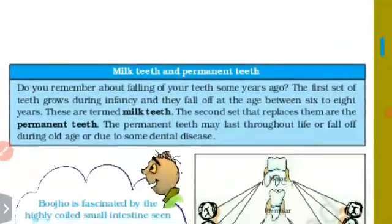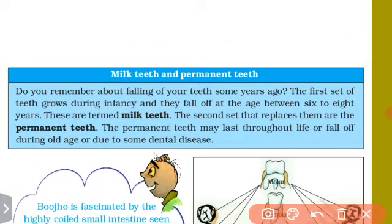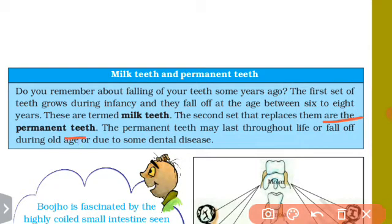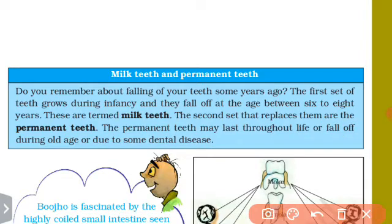We have eight milk teeth and permanent teeth. Do you remember about the falling of your teeth some years ago? The first set of teeth grows during infancy and they fall off at the age of six to eight years. The second set that replaces them are the permanent teeth, which may last throughout life or fall off during old age or due to some dental disease.